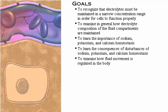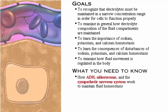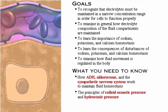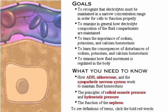To examine how fluid movement is regulated in the body. Here's what you need to know: how ADH, aldosterone, and the sympathetic nervous system work to maintain fluid homeostasis; the principles of colloid osmotic pressure and hydrostatic pressure; and the function of the nephron. To see definitions of terms, click the bold red words.